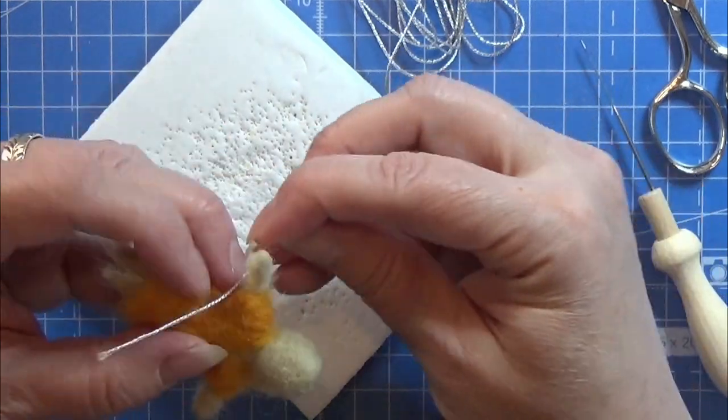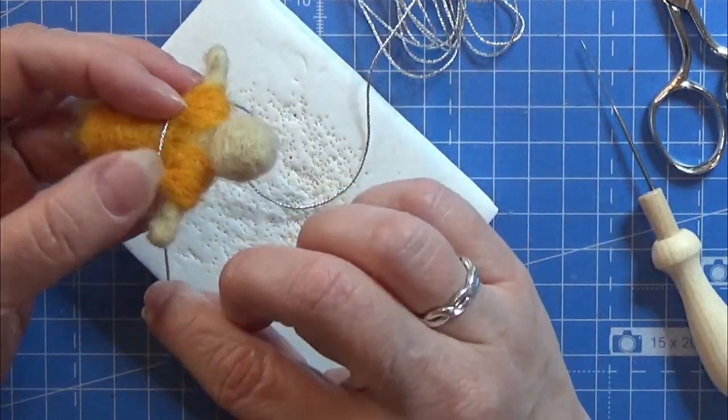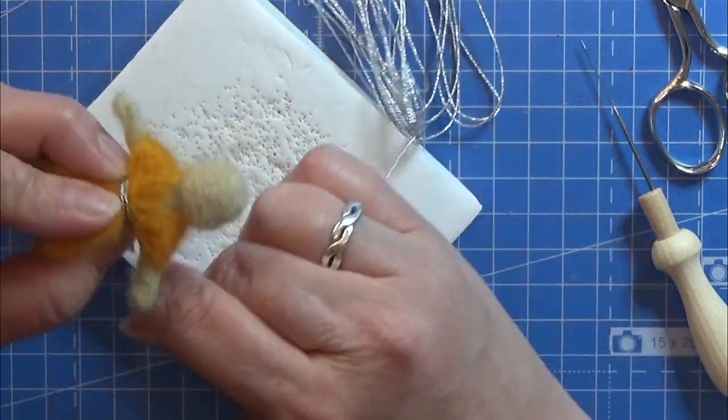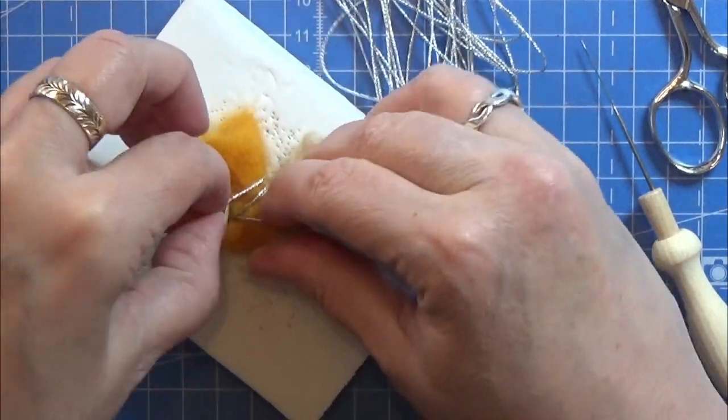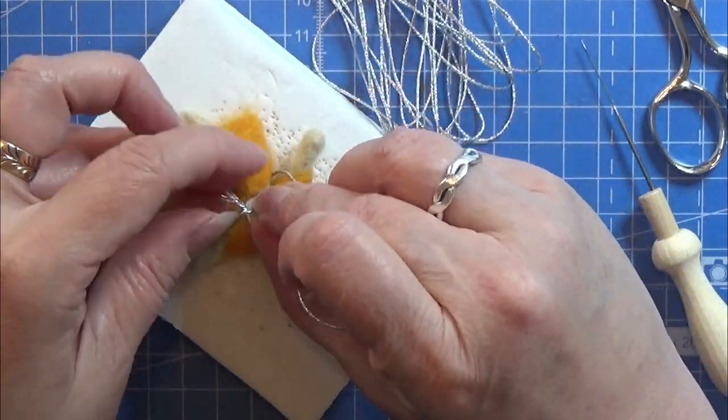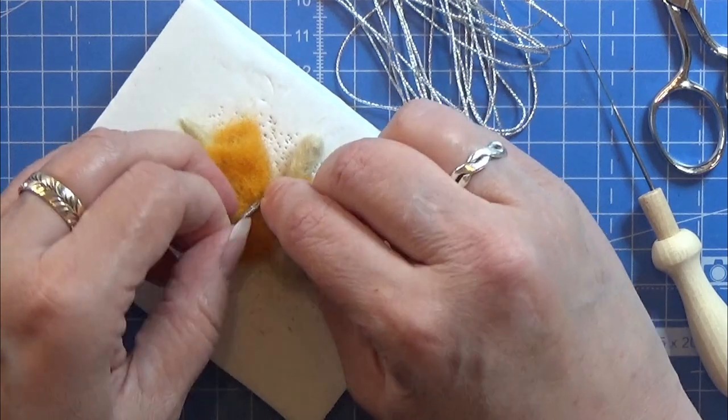I'm taking a tiny bit of this silver string that came with the kit and wrap it around her waist a few times and make a little tiny knot and cut off the rest of the string.